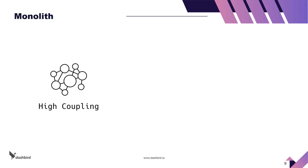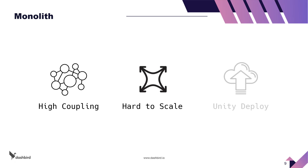A monolith usually leads to a higher level of coupling in the codebase; however, they are harder to scale, since we cannot customize resource allocation for each component, and can only be deployed as a unit, which can make the deployment process slower and riskier.